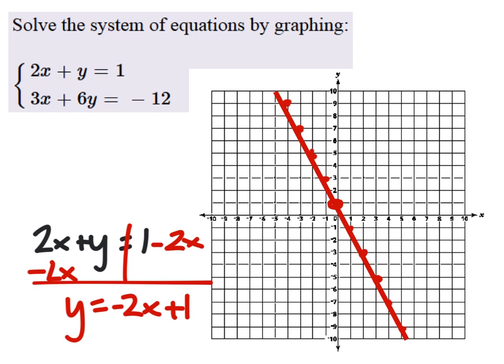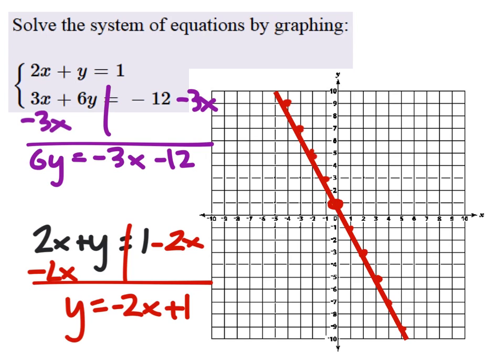Now let's look at this other equation. We'll subtract 3x. That would give us 6y equals negative 12, say negative 3x minus 12. And we'll divide everywhere by 6. So we get y equals negative 1 half x minus 2.